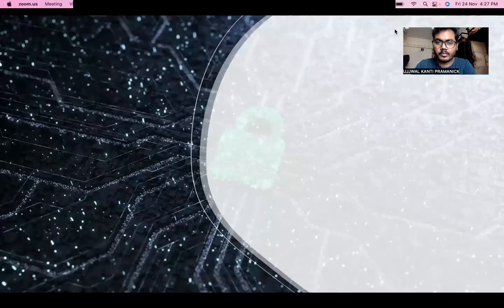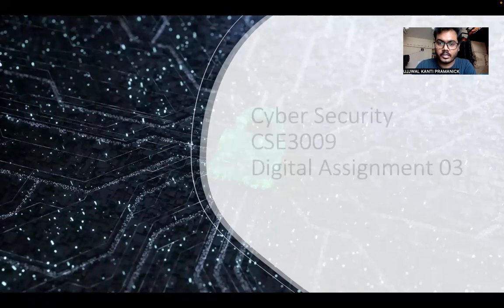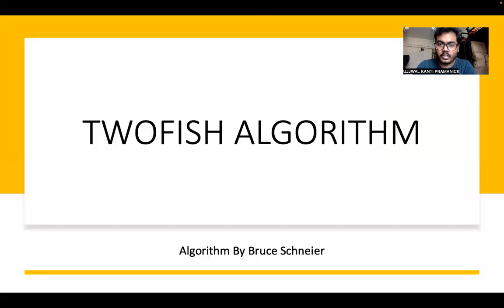Hello, I am Ujjal Kanti Pravanik and my registration number is 20BC1714. Today I am going to explain about the TwoFish algorithm.